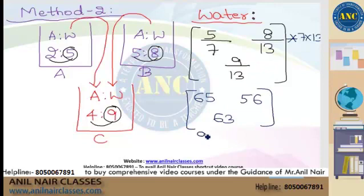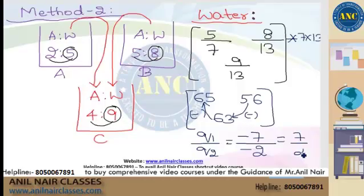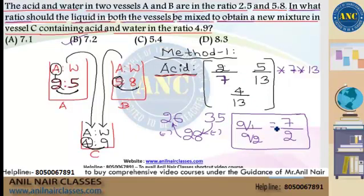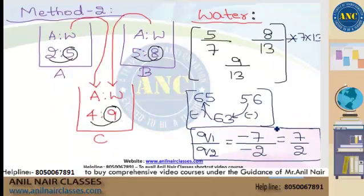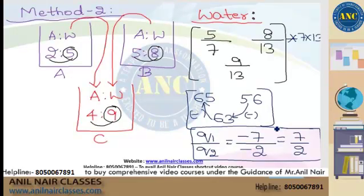Applying the allegation formula: Q1/Q2 = (P2 − P)/(P − P1) = (56 − 63)/(63 − 65) = −7/−2 = 7/2. Either you take acid or water as the base reference, you will definitely get the same answer of 7:2. The answer for this variety of allegation question is 7:2.